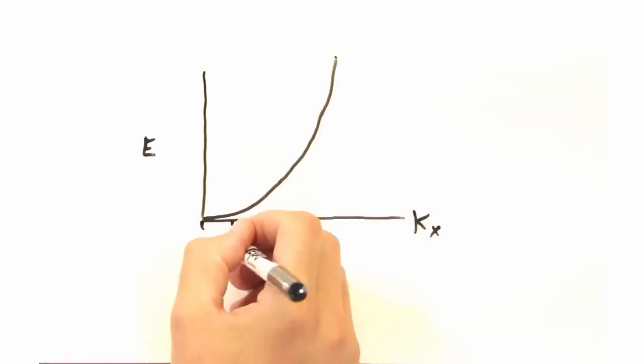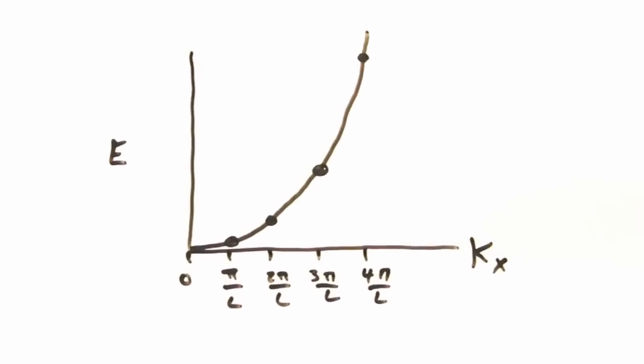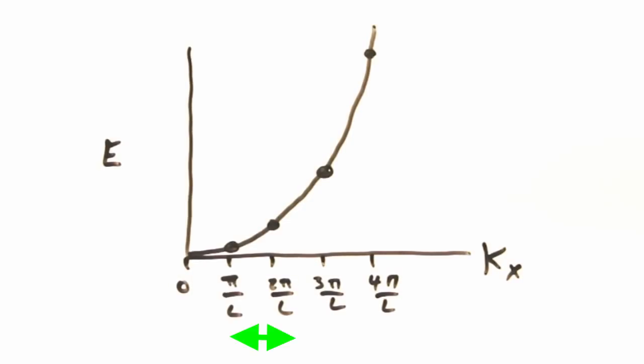One important thing we should point out, Nicole, is because we define k in terms of an integer, n sub i, our k space is discrete, just like it was in phonons. Where the spacing is pi over l instead of 2 pi over l.